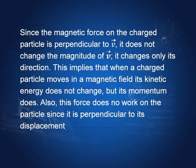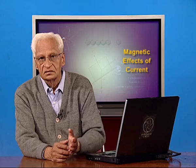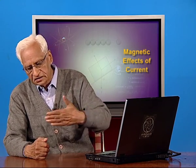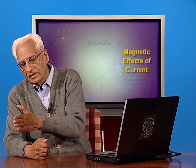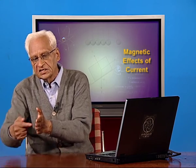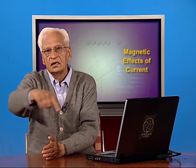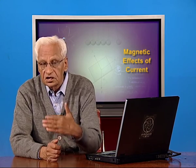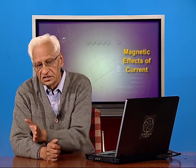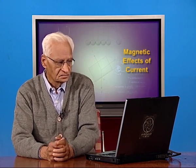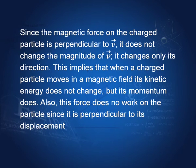Since the magnetic force on the charged particle is perpendicular to both v and B, it does not change the magnitude of v. It changes only its direction — if the particle was going in this direction, the magnetic field makes it move around the lines of force. This means that the kinetic energy of the particle is not changed, but its momentum does change.